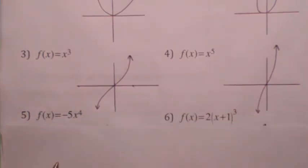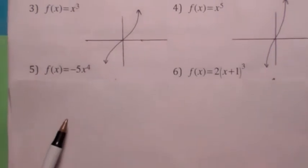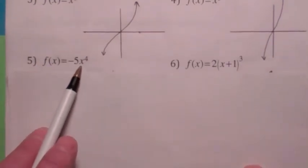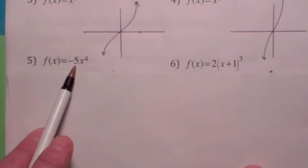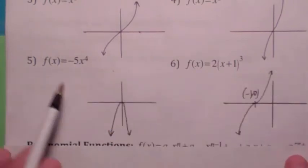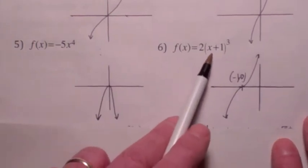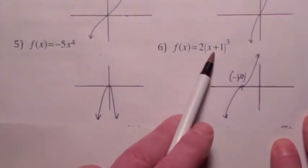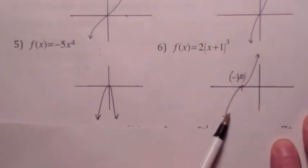And then, if you want to look at some simple translations of those, this just looks kind of like x to the 4th, but it's been reflected across the x-axis and a little bit narrower. So it might look like this. And this one, you take x cubed, you shift it over 1 to the left, and make it steeper, so it's going to look more like this.